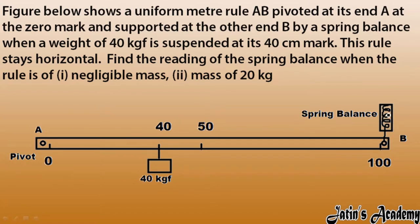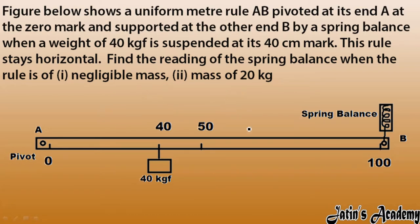A weight of 40 kgf is suspended at the 40 centimeter mark. We have to find the reading of the spring balance when the rule stays horizontal — meaning clockwise movement and anticlockwise movement must be equalized. There are two cases: first, the rule is of negligible mass, and second, the rule has a mass of 20 kg.